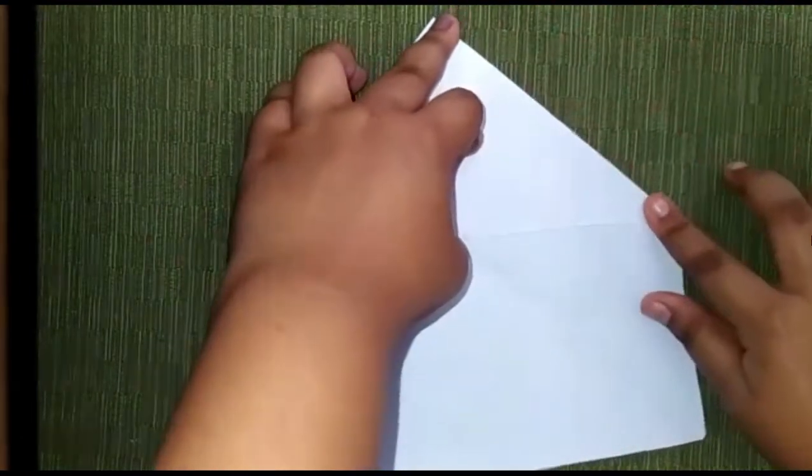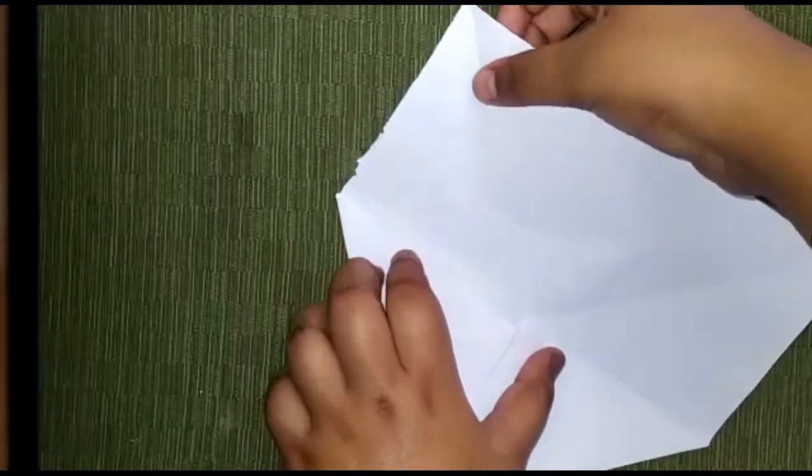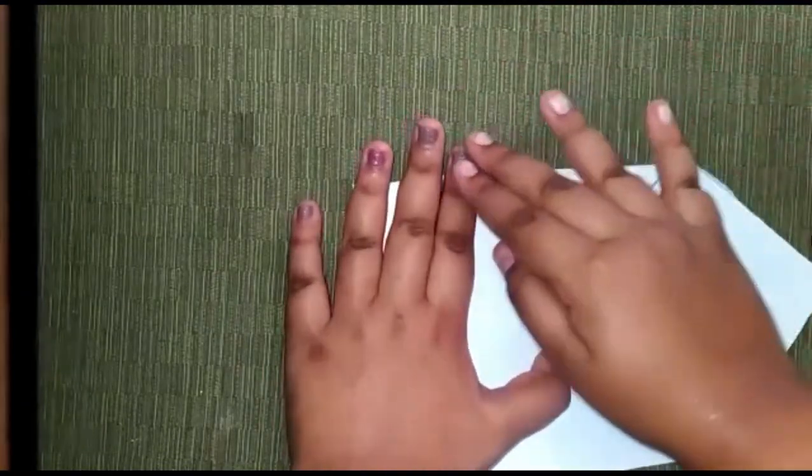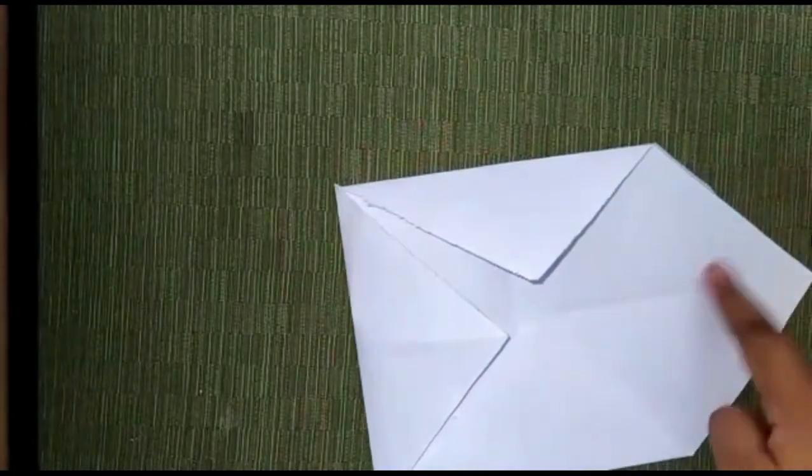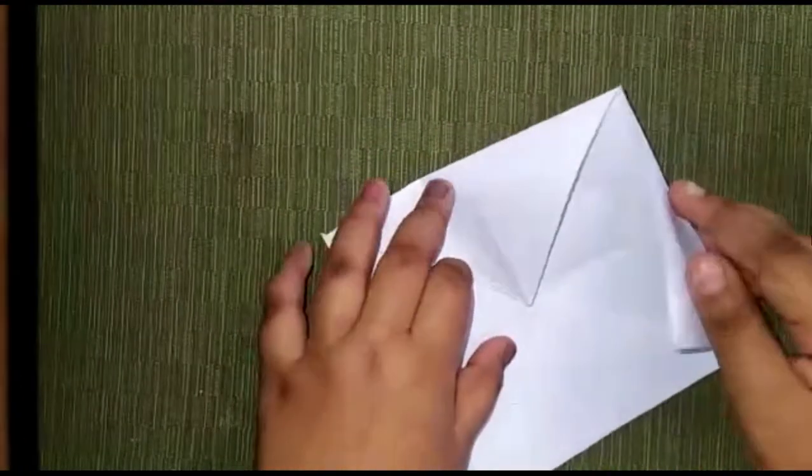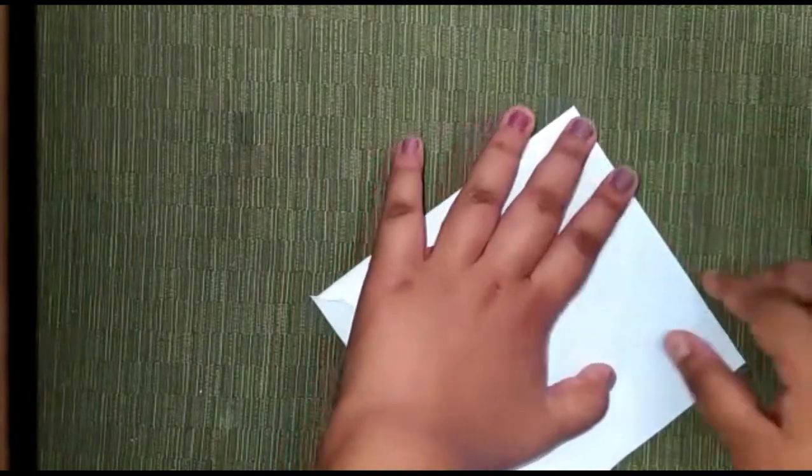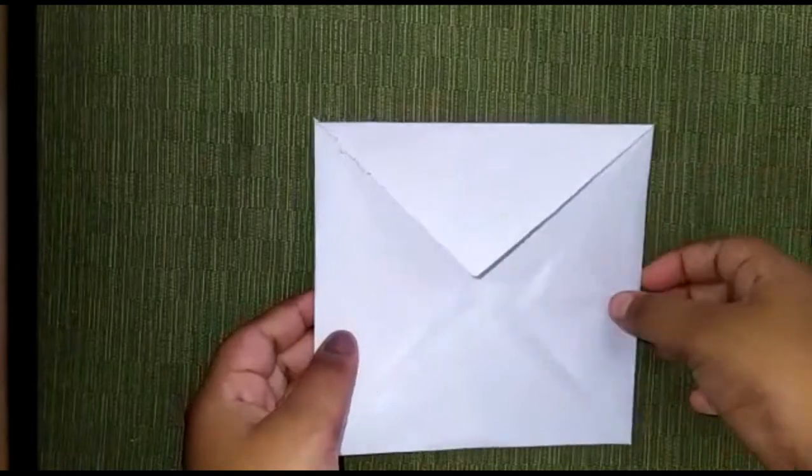So you're going to make it into the line straightly, now this side, and now the last side. There we go. And then now it's a smaller sheet of square paper.